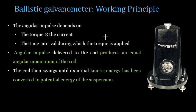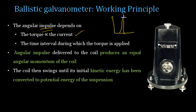An angular impulse is produced on the moving system, and this is very similar to a bullet striking a pendulum. Once the bullet strikes the pendulum, the entire energy is passed to the pendulum producing deflections. Similarly, the impulse depends on the torque produced, which is proportional to the current flowing for a short duration, as well as the time interval during which the torque is applied. If the energy is delivered over a longer time, the impulse will be minimum. The angular impulse is delivered to the coil, producing an angular momentum that causes the moving system to deflect.